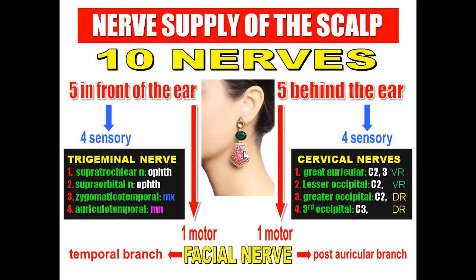To summarize the nerve supply: the scalp is supplied by ten nerves, five in front of the ear and five behind the ear — each group with four sensory and one motor. The motor branch is from the facial nerve: temporal branch in front, posterior auricular branch behind. The sensory nerves in front of the ear are branches from the trigeminal nerve; behind the ear they are branches from the cervical nerves.